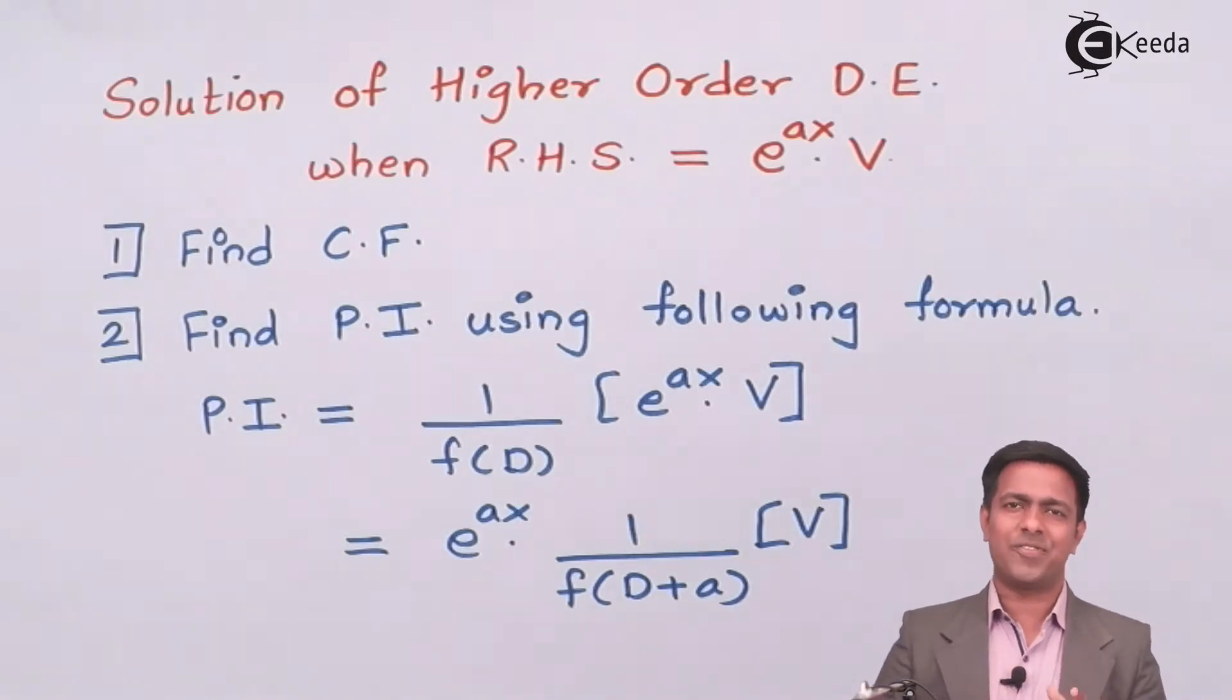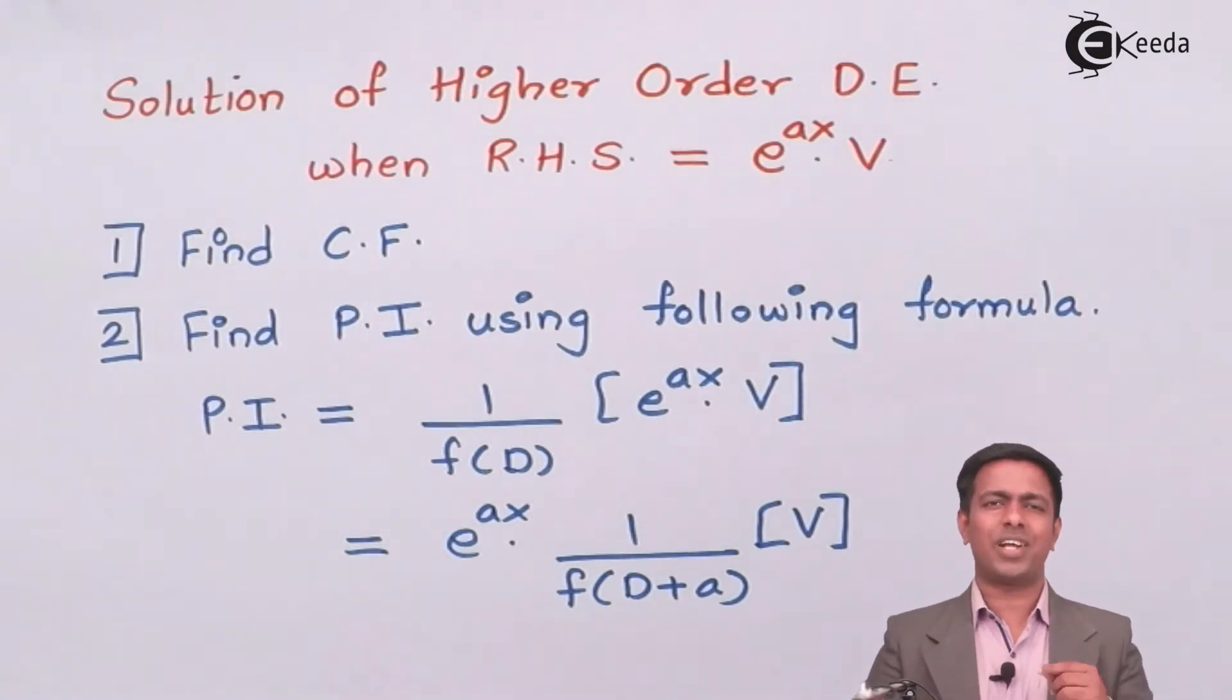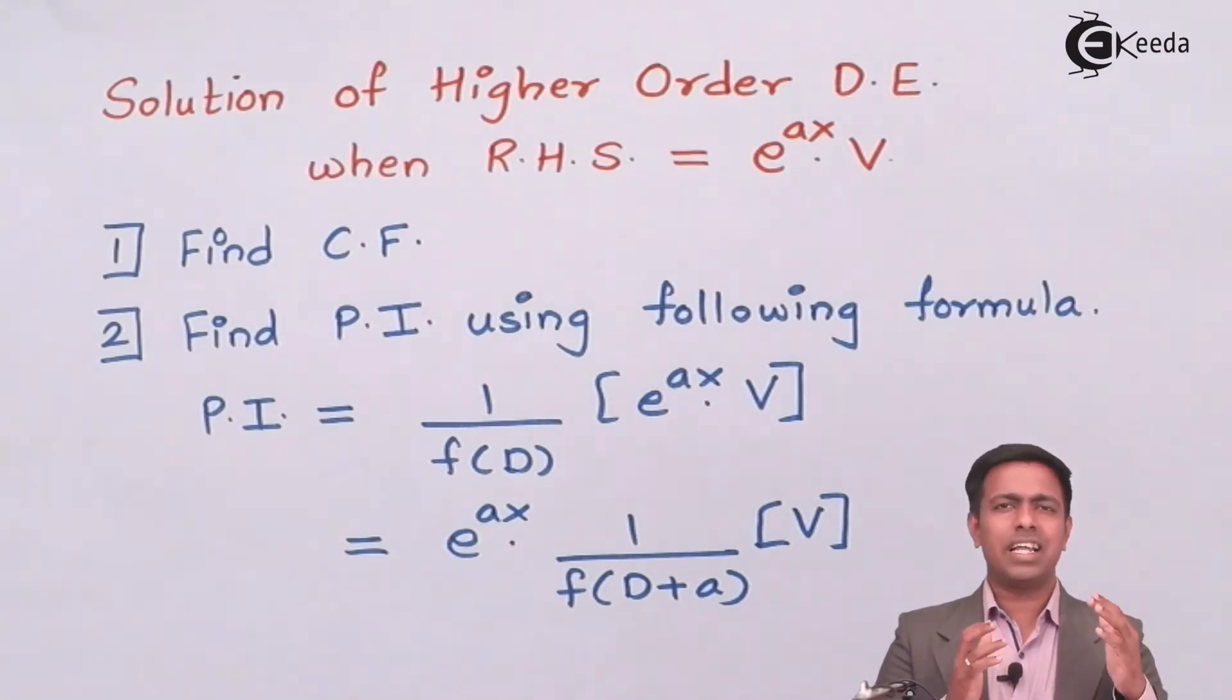So to get the complementary function, which we also call YC, can be found out by using the auxiliary equation. To get the auxiliary equation, equate f of D to 0, get the roots of the equation, and then get the complementary function. I am sure that in the previous video you have understood how to find out the complementary function for different roots.